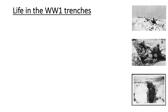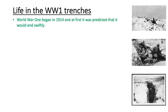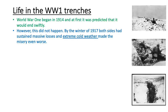Before we start to analyse or think more deeply about the poem, let's talk about some useful context. Exposure doesn't explore the enemy soldiers as predatory, but rather the weather. World War One began in 1914, and at first it was predicted that it would end swiftly, but this wasn't the case. By the winter of 1917, both sides had sustained massive losses, and extreme cold weather made the misery even worse.